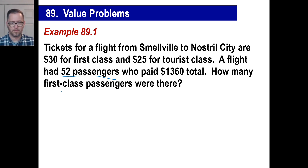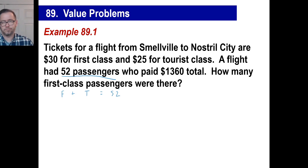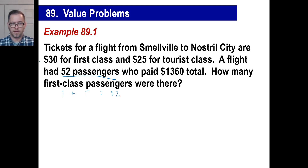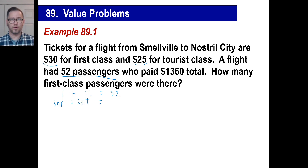If you have some tourist class and some first class and there are 52 of them together, you write: first class plus tourist class equals 52 — just like you would say N plus D equals 20 for nickels and dimes. The second equation: $30 for first class, so 30 times F, plus $25 for tourist class, so 25 times T, equals $1,360. That gives you your total.